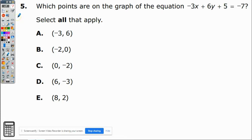Welcome to an Algebra 1 sample question number 5. For this question we have which points are on the graph of the equation -3x + 6y + 5 = -7. Select all that apply.